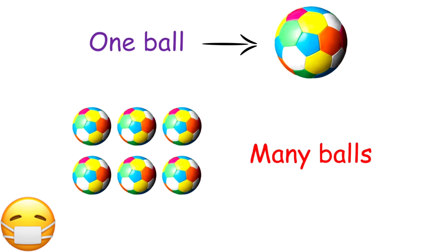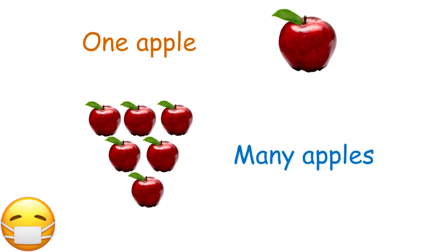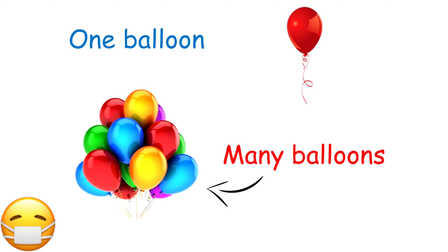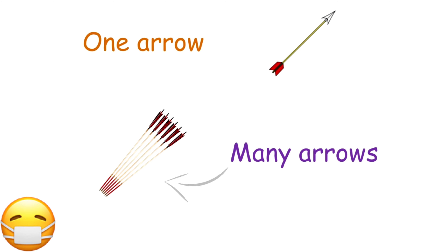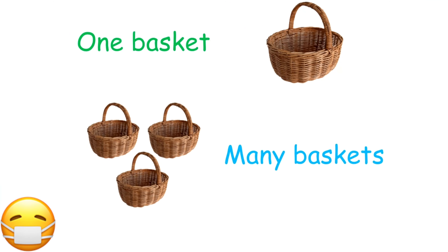One ball, many balls. One ant, many ants. One apple, many apples. One balloon, many balloons. One arrow, many arrows. One banana, many bananas. One basket, many baskets.